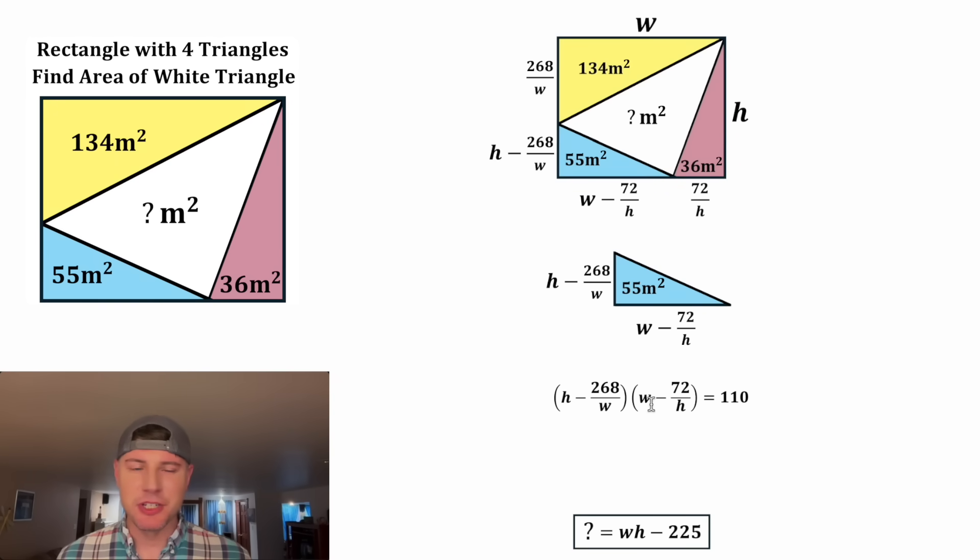And then H times negative 72 over H will just be negative 72 because the Hs will cancel each other out. And then negative 268 over W times W will be just negative 268 because once again, the Ws will cancel each other out. And then negative 268 over W times negative 72 over H ends up being 19,296 over HW.